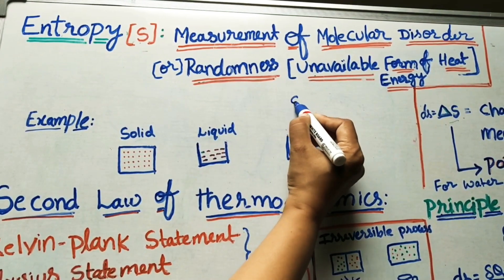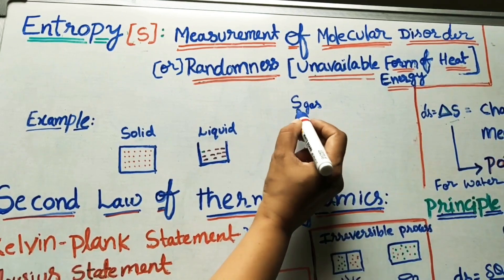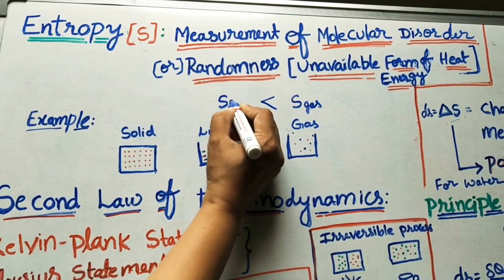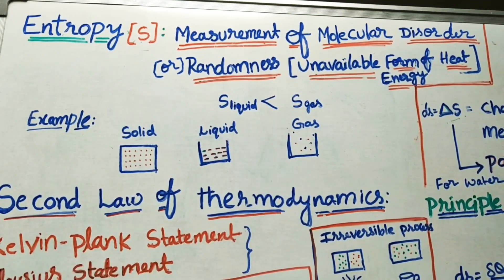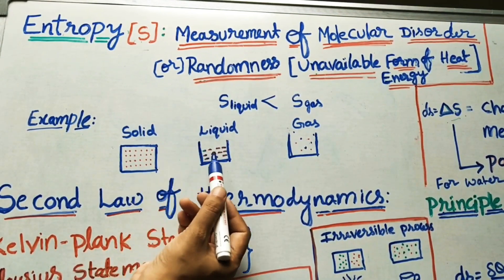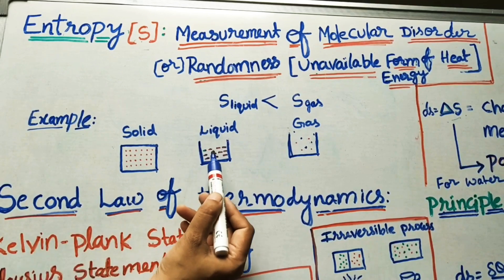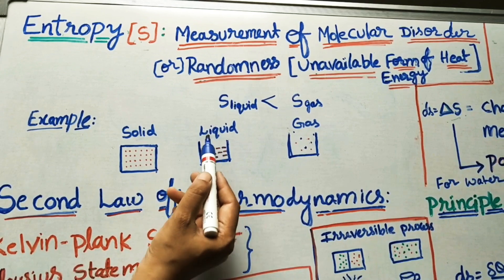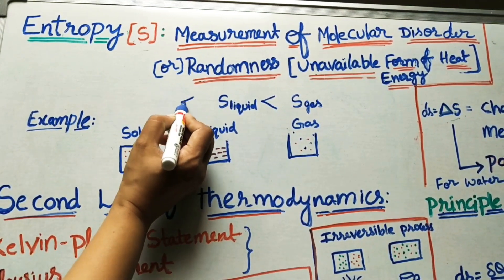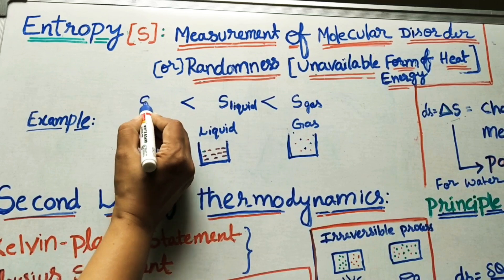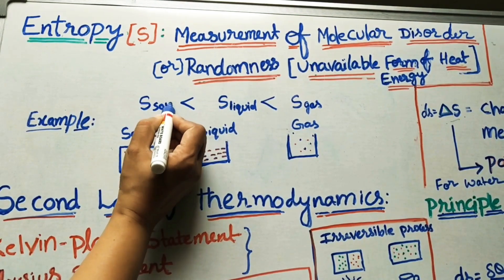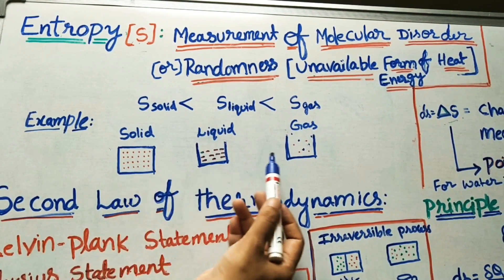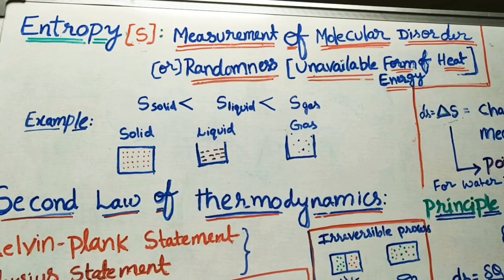Comparing the three states: entropy of gas is more than entropy of liquid, written as S_gas > S_liquid. In solid and liquid, disorder is a little more in liquid compared to solid, so S_liquid > S_solid. In gas, disorder of molecules is greatest, so entropy is highest.